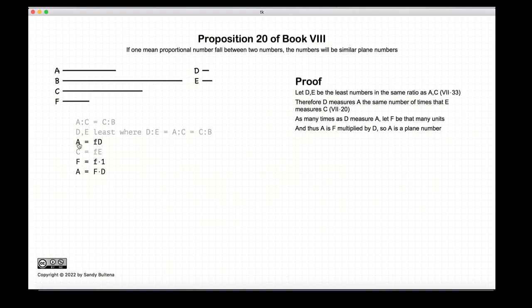Alright, so if D measures A F times and 1 measures F F times, then A is equal to F times D. And A is a planar number.